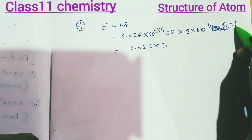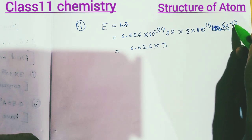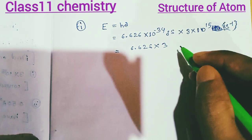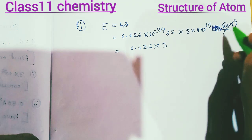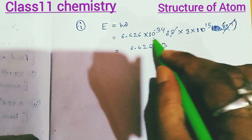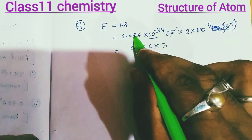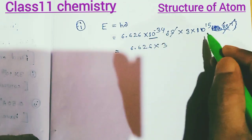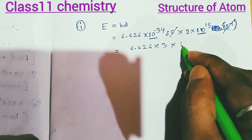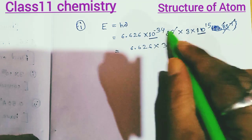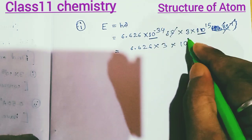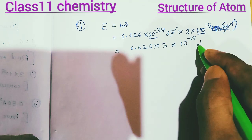Hertz means second minus one. So the units are: second and second minus one cancel, which gives joules. The power calculation gives us minus 34 plus exponent terms. The result is minus 5, then minus 2, then minus 1. This gives joules.